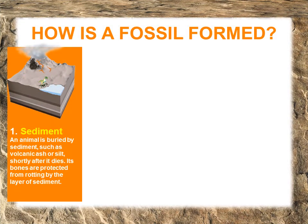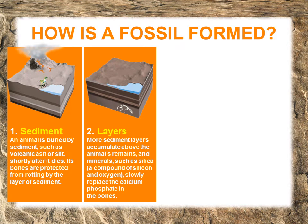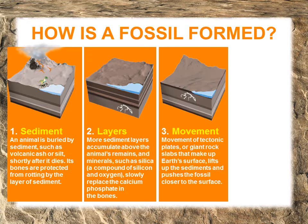How are fossils formed from once living things? Well, first, the animal has to live and die. Once it dies, it is then covered by volcanic ash or sediment before it can fully decompose. The remains being covered helps prevent it from rotting away.